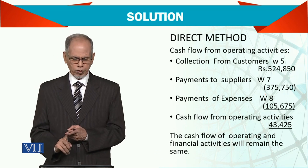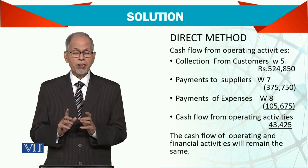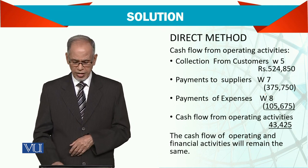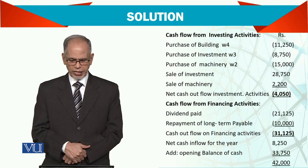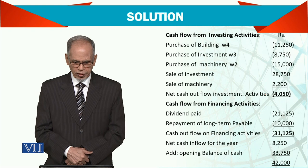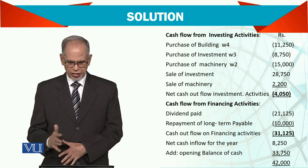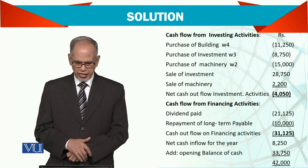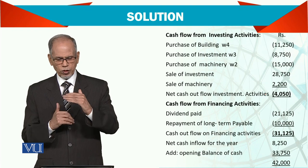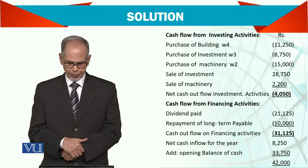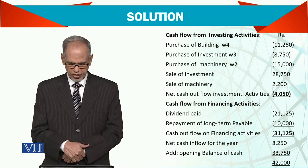The direct method gives the same figure — $43,425. The cash flow from operating and financing activity will remain the same as for the indirect method. Now, investing activities: purchase of building is noted, purchase of investments is clear, purchase of machinery is also clear. With those notes, the figures are available. Sale of investments and sale of machinery are also given.